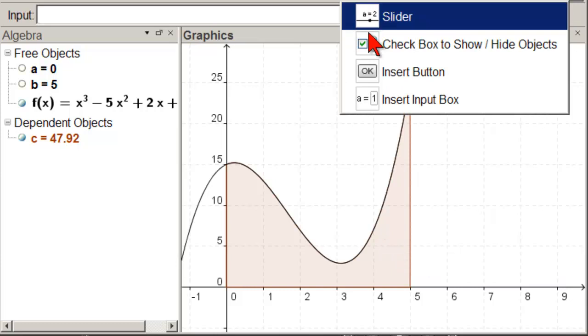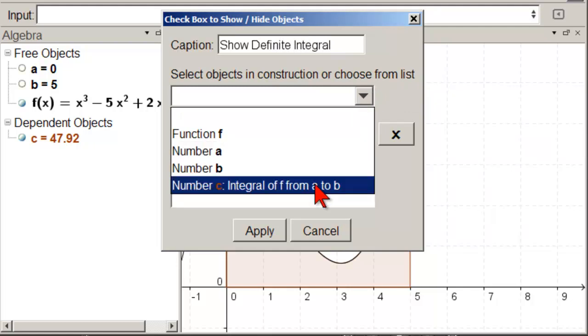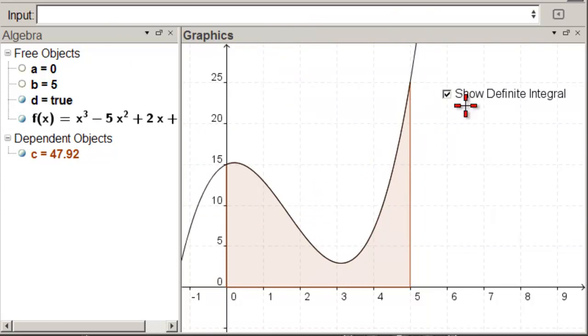The value of the integral is actually the area underneath the curve. So, now we're going to put a check box, so whether we want to see that or not. So let's get a check box. Click over here, and show definite integral. Come in here and choose C, the integral. And now, get the move tool, and we can turn it off and on. So we're done with the exact definite integral part.